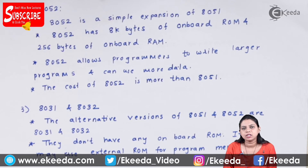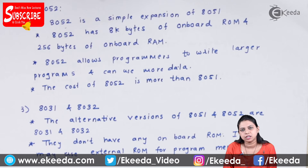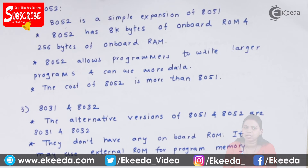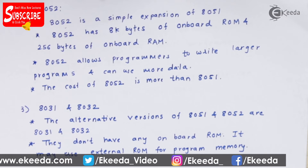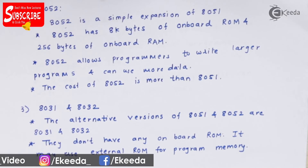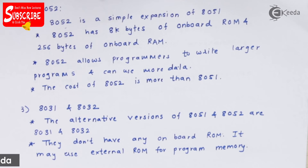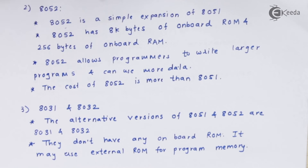Next are 8031 and 8032. These are the alternate versions of 8051 and 8052, and they do not have any onboard ROM. So if you want to use ROM, you may use external ROM for the program memory.